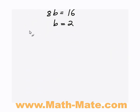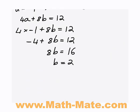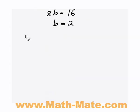Now, it's always a good idea to summarize all your answers at the end of the question, so it makes it easy for your marker. So a equals negative 1 and b equals 2. And we can put a little double line to indicate that's our answer.